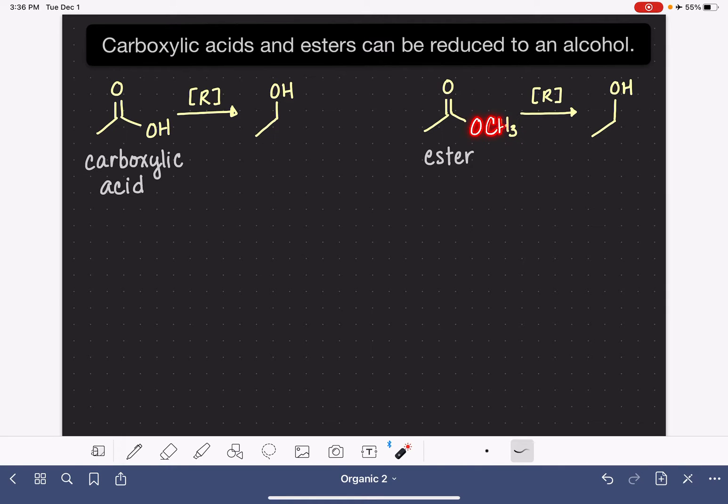So for example here, I have an OCH3 group. This could be an OCH2CH3 group. It could be a much longer carbon chain.